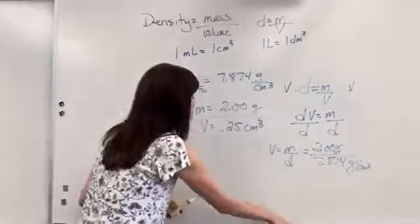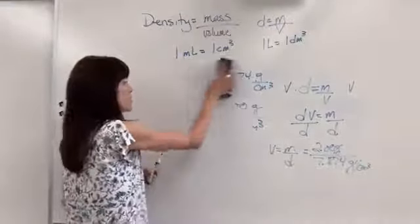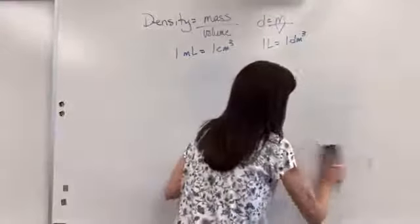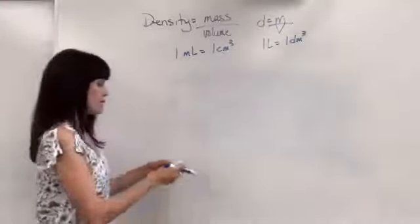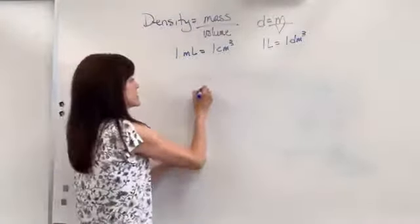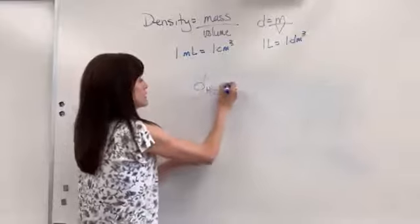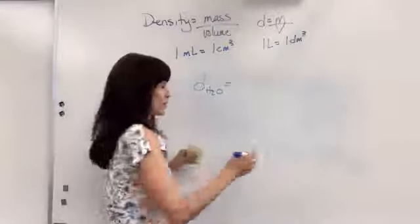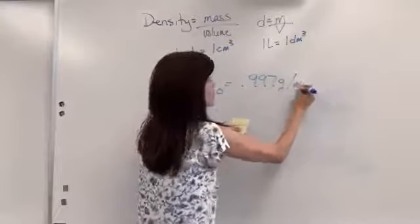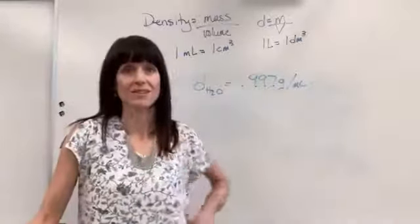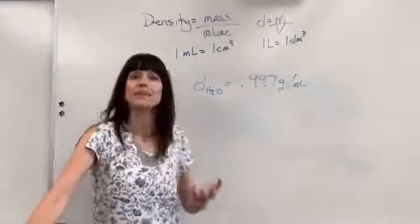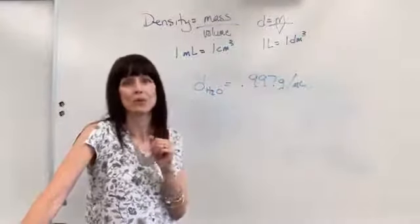Let's do one more just in case you are given a problem where you have to solve for the mass. Okay in this one we're going to use the density of water. So the density of water, this is being really nitpicky too by the way, is 0.997 grams per mL. I'll let you in on a little secret. For labs we round that up and say the density of water is one gram per mL.